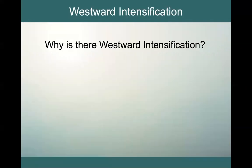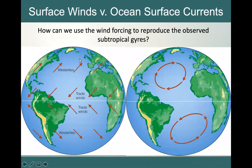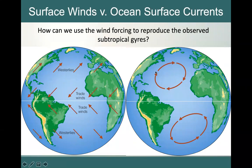So why is there westward intensification? Why does this happen? One way to start thinking about this is by looking at wind forcing. We have a simple schematic showing the dominant winds — our westerlies and our trade winds in both hemispheres. Our trade winds go from east to west, and our westerlies go from west to east. Using this wind forcing, we can see how it might help us reproduce what we observe: subtropical gyres that are anti-cyclonic circulations — clockwise in the northern hemisphere, counterclockwise in the southern hemisphere.